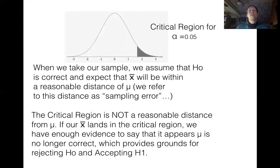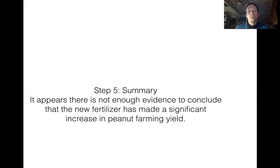So now we have all the information we need to make a summary statement. We're going to say it appears that there's not enough evidence to show that the new fertilizer is making an increase in the yield. And notice we're using the word 'appears.' That's because our answer is still based on statistics and probability at the end of the day. It means it's not 100% perfect. So that's why we're using the phrasing 'appears.'